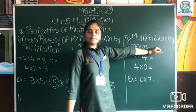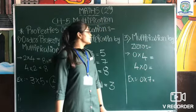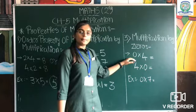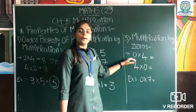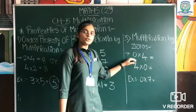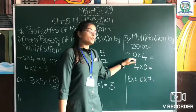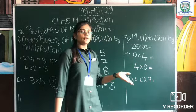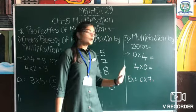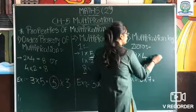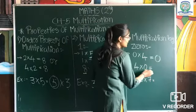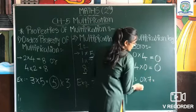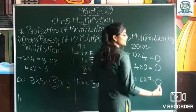The third property is multiplication by zero. When any number is multiplied by zero, the answer is zero. For example, zero into four equals zero. Four into zero also equals zero. Zero into seven equals zero. Thank you.